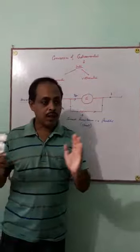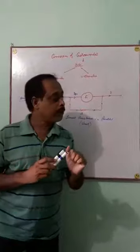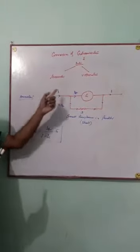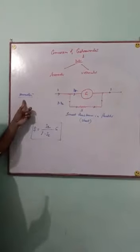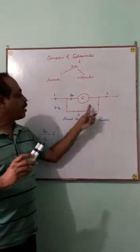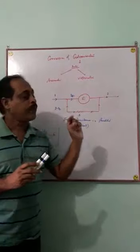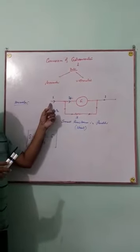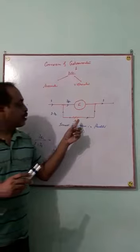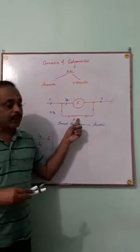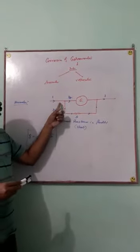First, to convert a galvanometer into an ammeter, the arrangement is that the galvanometer is connected with a small resistance S in parallel. Here you see the main current is I. When the small resistance S is connected in parallel, the amount of current I minus Ig passes through this resistance, where Ig is the current through the galvanometer.